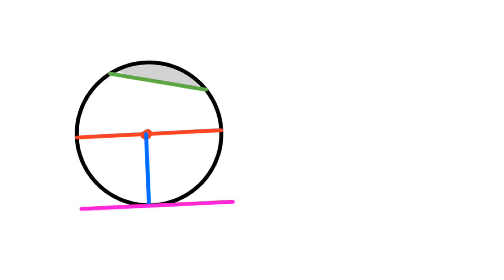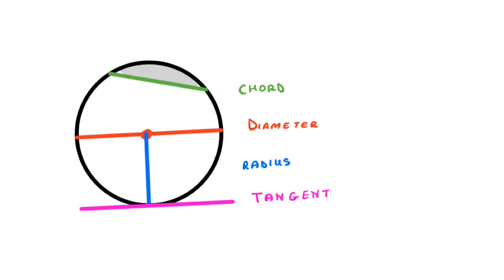Before we start learning about the circle theorems we should know the different parts of the circle. This here is your diameter. This is your radius. This is a tangent — a tangent touches the circle at any one point. This is a chord, and this here is called a segment.